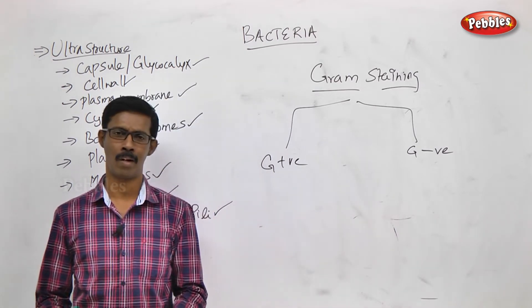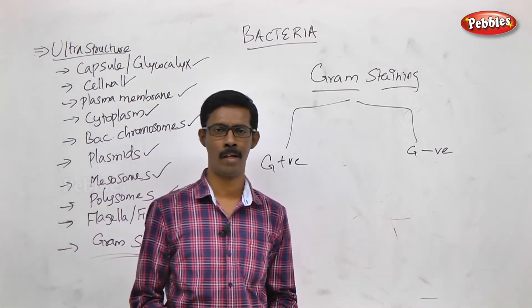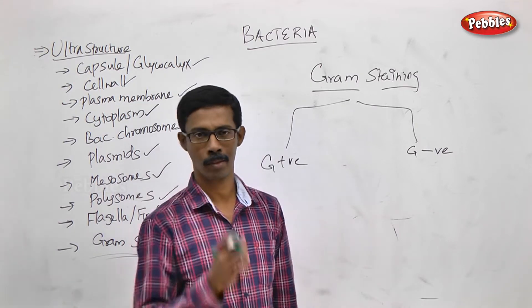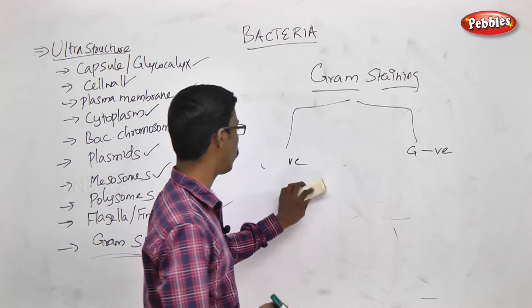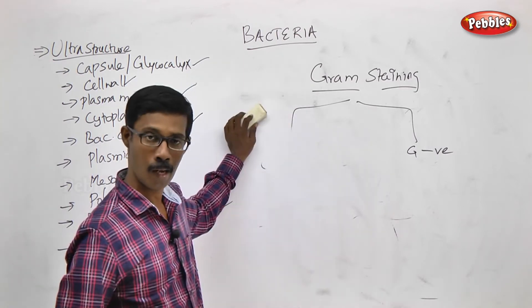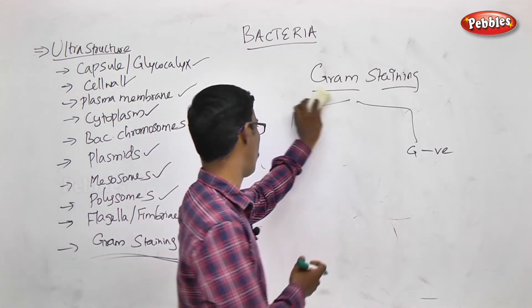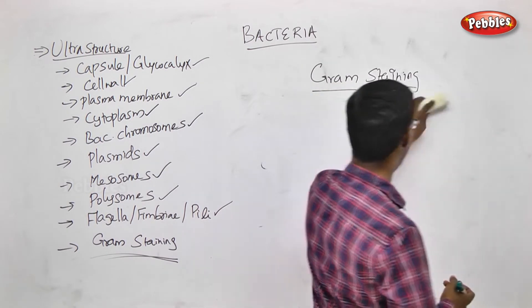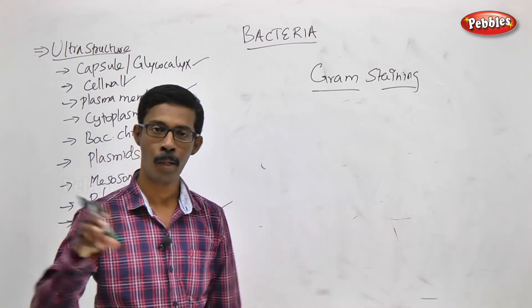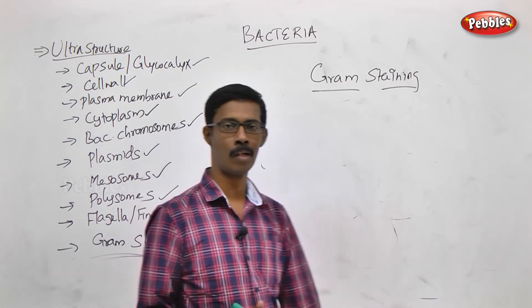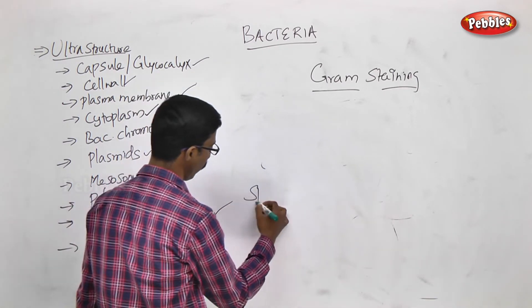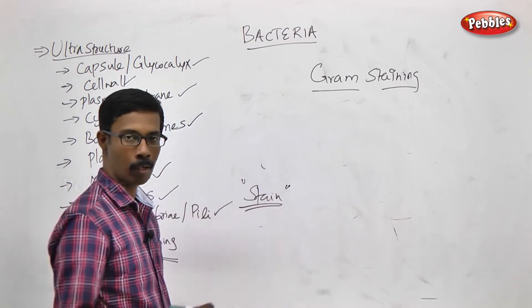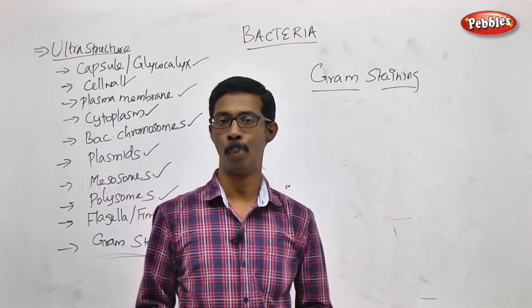This is not a random trial-and-error method — the principle is very important. The principle tells us whether bacteria is Gram positive or negative. Staining means importing color into a particular structure. That is color — we put the color into the cell.